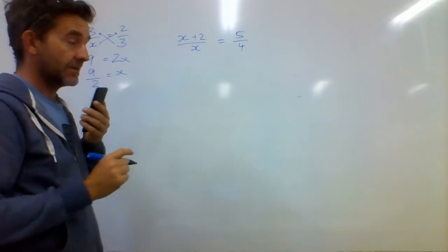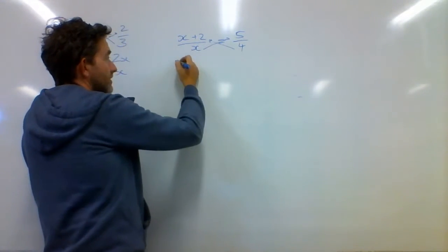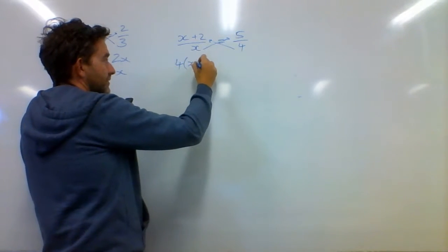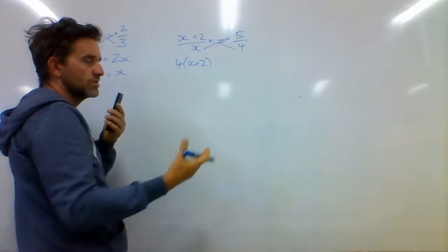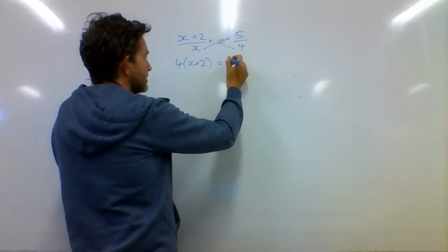But what we can do is again cross multiply. So multiply that by that and multiply that by that. So I have 4 multiplied by X plus 2, which you could resolve at the same time if you wanted to, if you're bright, is equal to 5X.